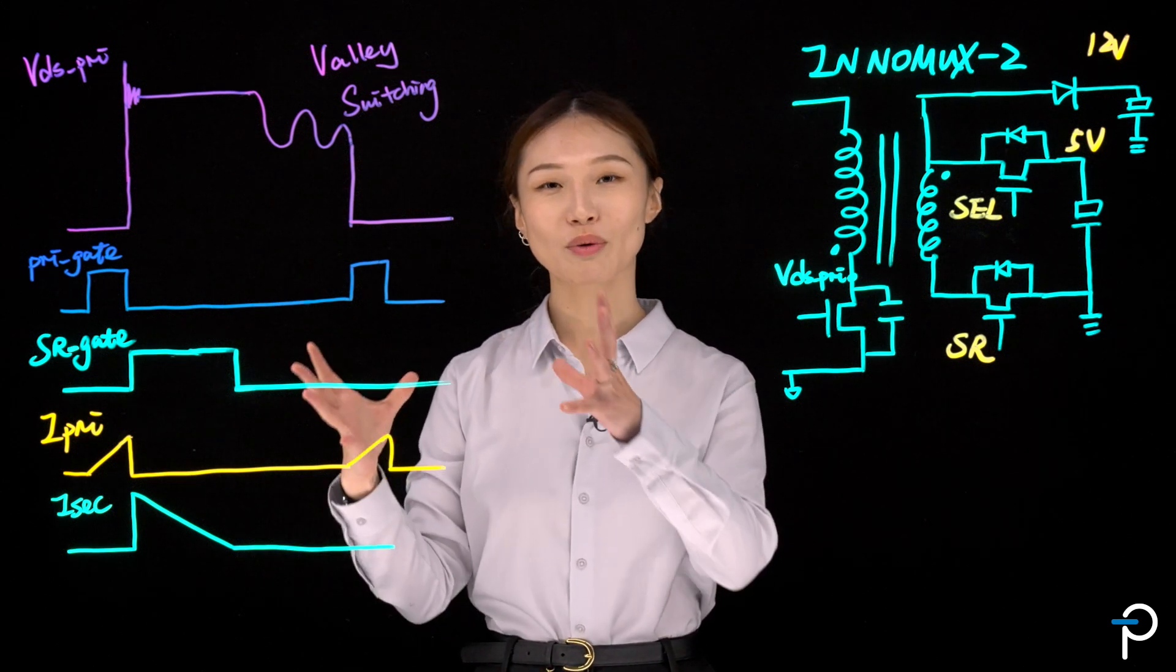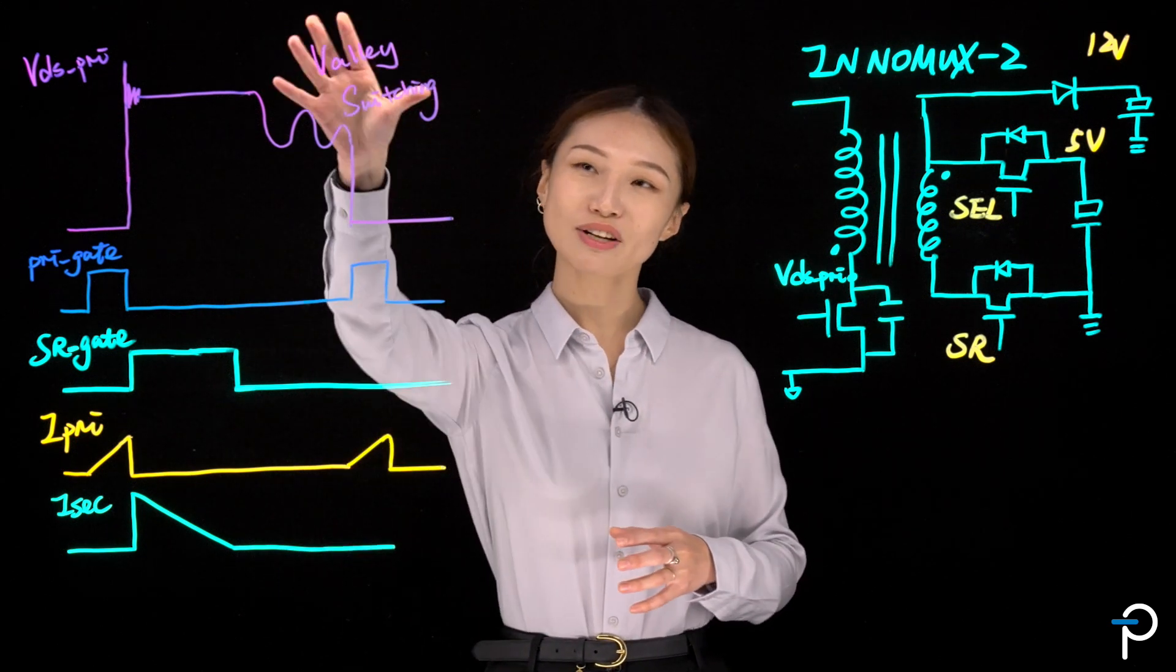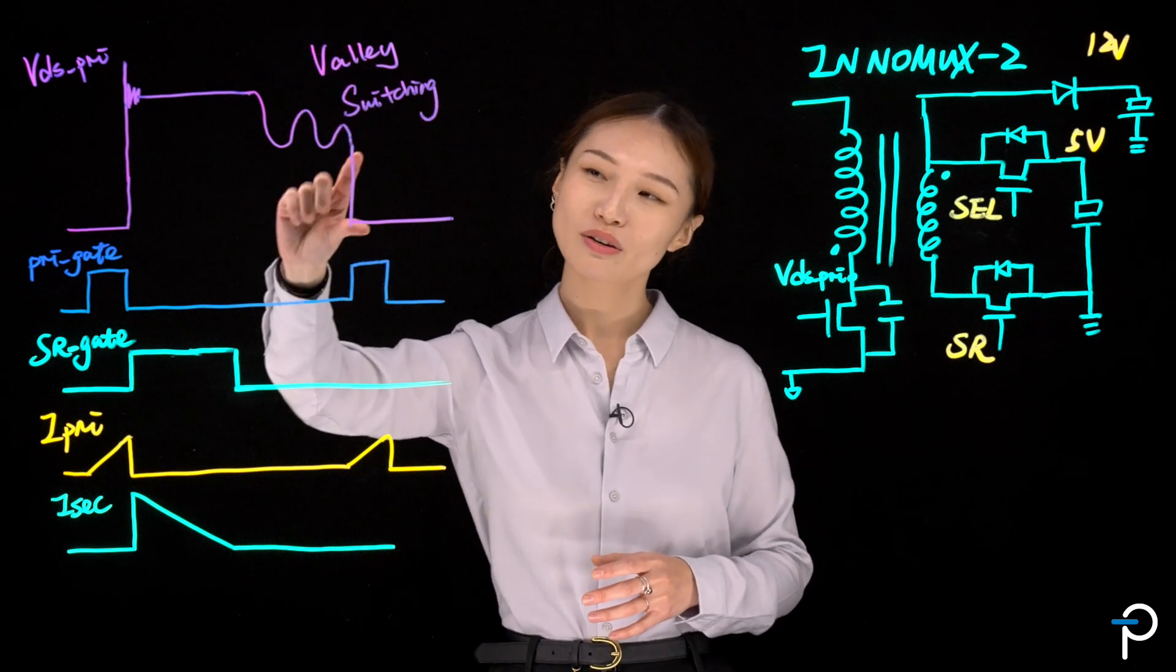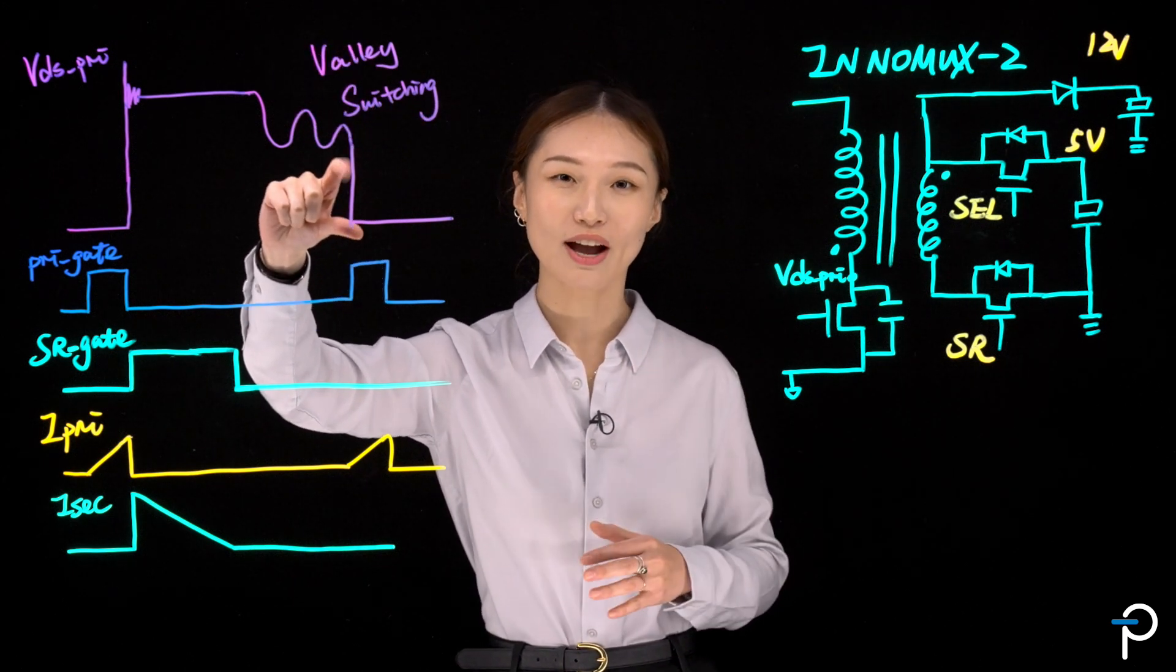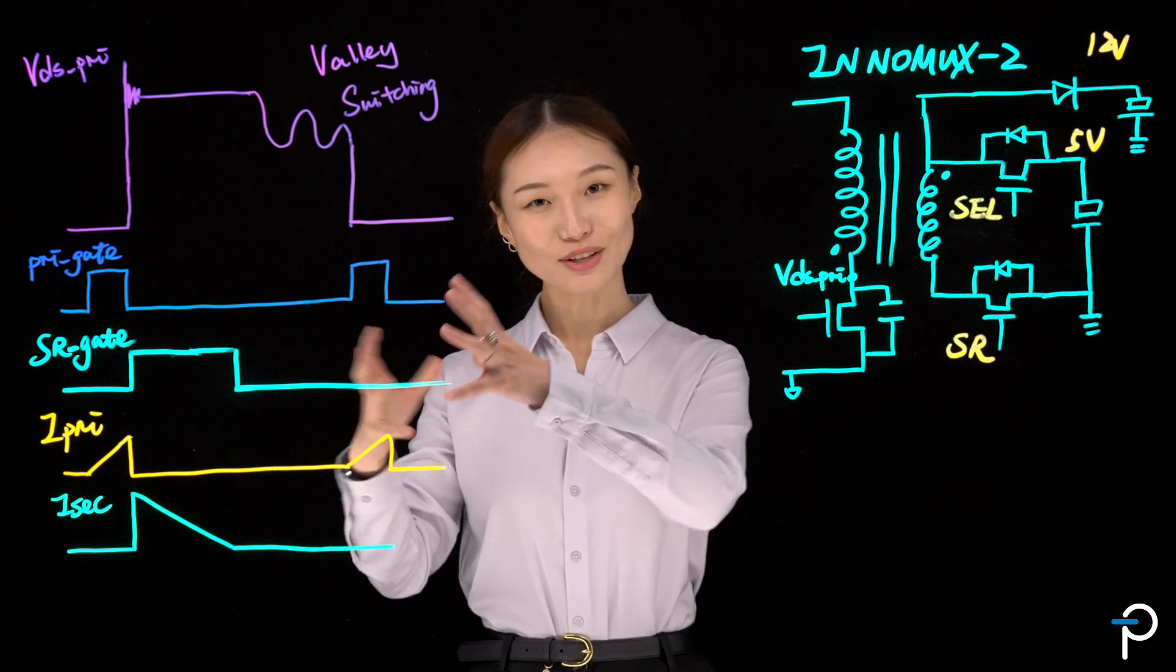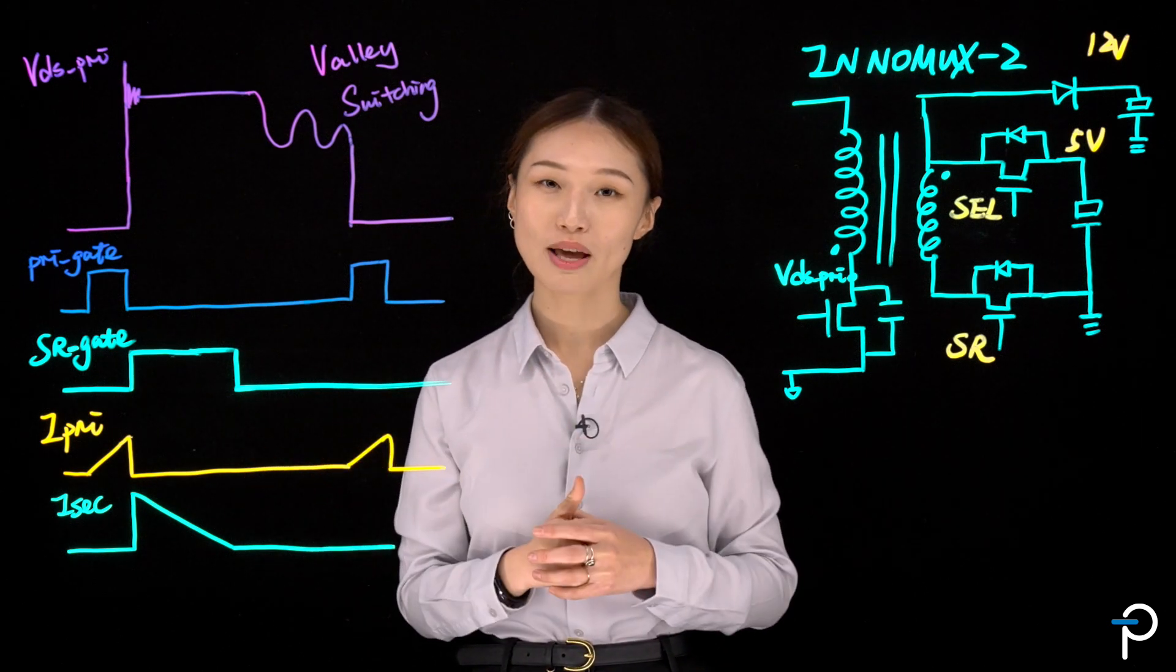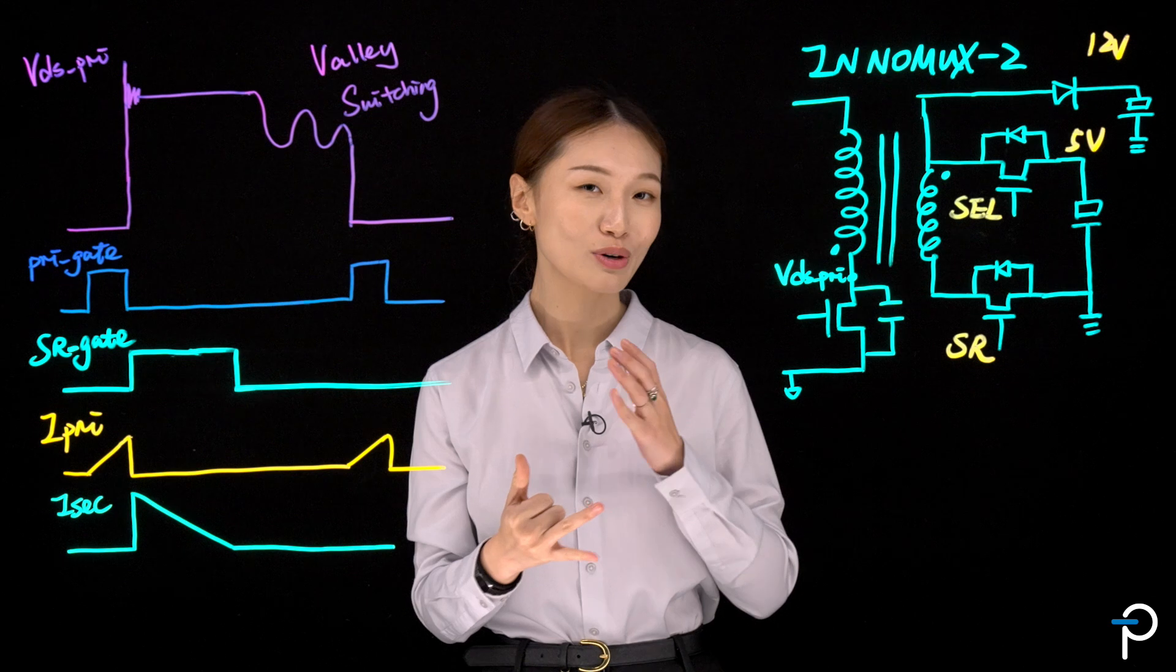As you can see, when we don't have any zero voltage switching, we're still turning on the primary switch when the voltage across it is quite high. These are the waveforms you're going to see on a traditional flyback with no active clamp or zero voltage switching.